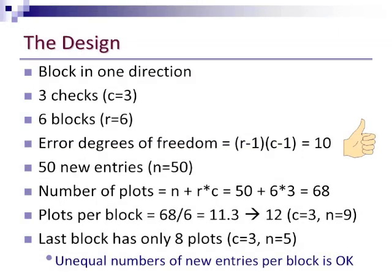As I said, we decided to block in one direction. We had these three checks, and we chose to use six blocks. We played around a little bit and realized that would give us an error degrees of freedom of 10, which is pretty much the minimum that you need to be able to detect differences unless you have a very highly heritable trait. We had the 50 new entries, so the total number of plots, including the replicated checks and the new entries, was 68.